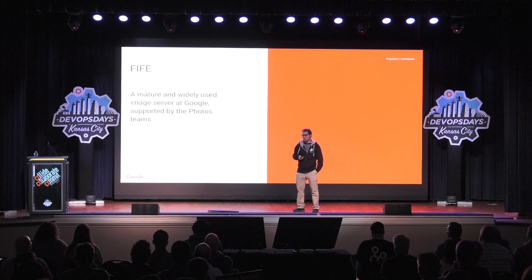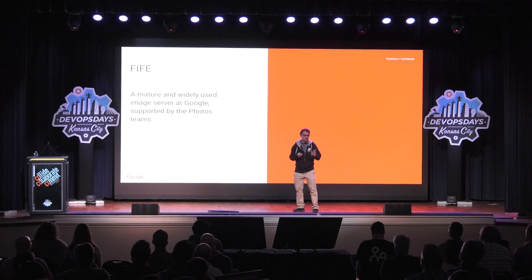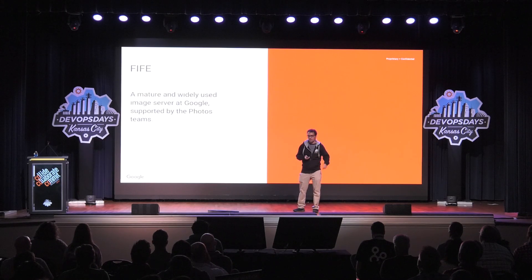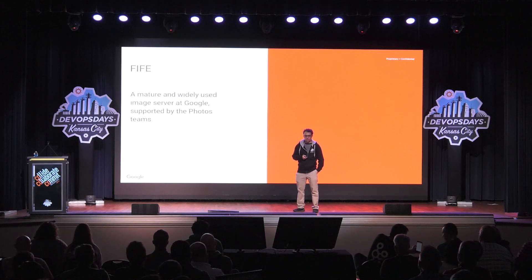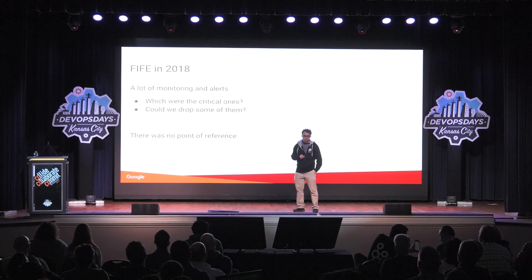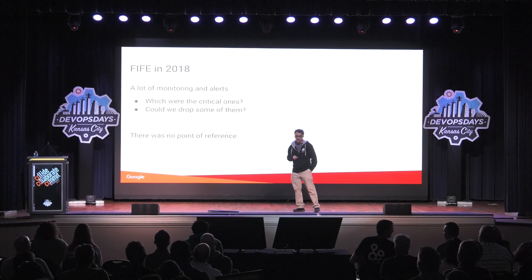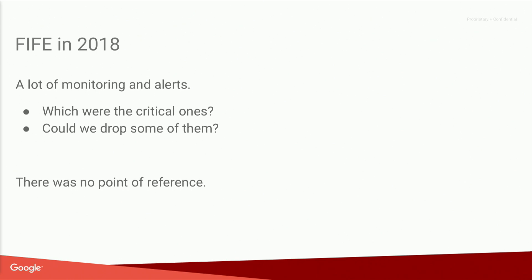The service I'm going to talk about is called Fife — that stands for Flexible Image Frontend. It's one of the older services we have in Photos. It's an image-serving service that used to power Picasa, and now powers Google Photos and Gmail, but also a bunch of other products across Google. Back in 2018, our team was tasked with migrating the monitoring and alerting of that service from one framework to another.